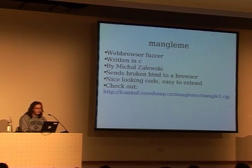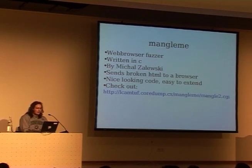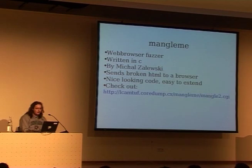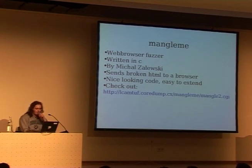The next one is the Mangleme fuzzer, written by Michal Zalewski, done somewhere last year — probably everyone knows it because it got Slashdotted. Basically what it does is generate something that looks like HTML but is very, very broken. The code itself is pretty clean and easy to extend. He's got a demonstration on his website at mangleme.cgi, which gives you a big warning saying things might go very wrong — files might get deleted, your box might crash. Then mangle2 is the actual tool which starts fuzzing your browser, and if you're lucky your browser will break.